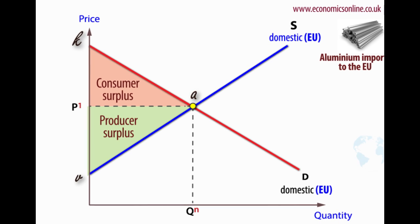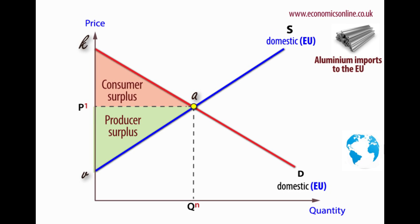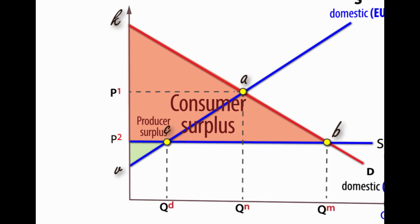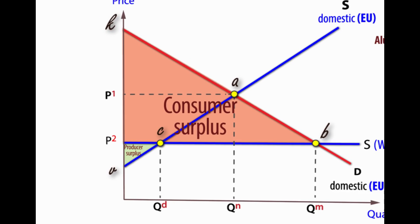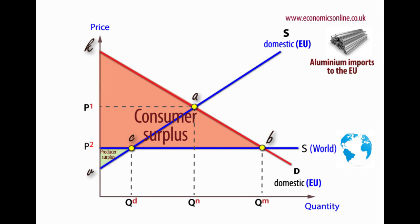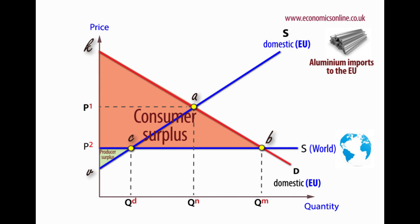If the market is open to free trade, world price is determined in the world market and will be lower than the price in any given territory. This lowers the EU price of aluminium to P2. The new equilibrium quantity is at QM. Demand extends from A to B. Consumer surplus increases to K, B and P2.